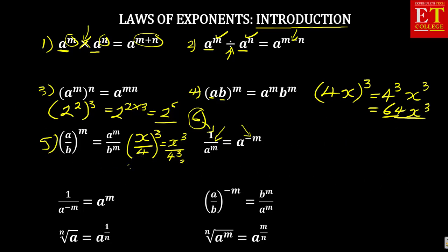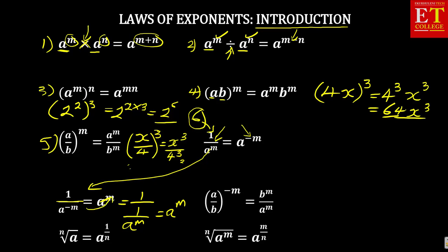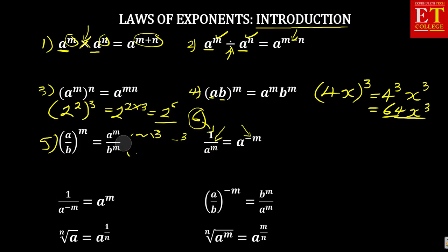It also says 1 over a to the power of negative m is equal to a to the power of m. What is happening is: because it's negative, to get rid of the negative, it's the same as 1 over a to the power of m, and 1 over 1 over is the same as a to the power of m. In short, if you see a negative and a division sign together, you take it out to be a positive. That is an important law — it saves you from lots of working.